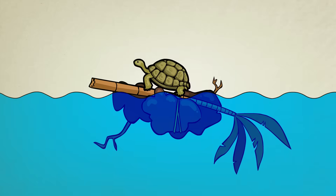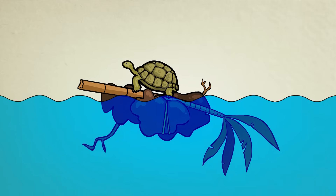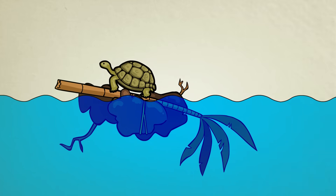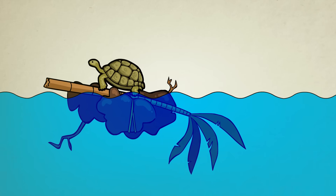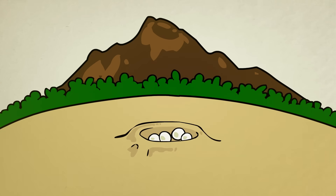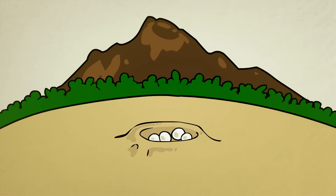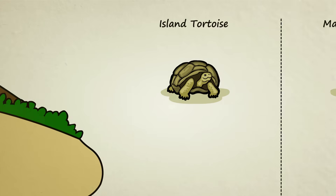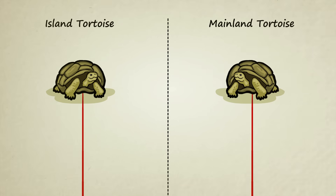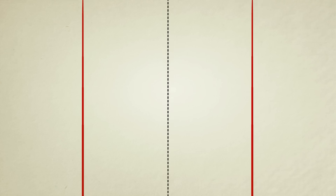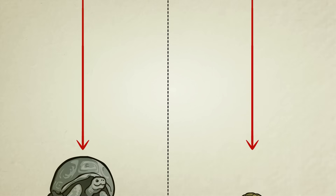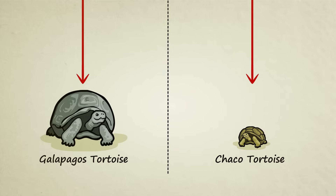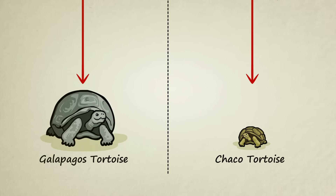Long ago, a tortoise from the mainland may have drifted to the islands, possibly on a raft of storm debris, and once arriving, laid her eggs. Random changes caused by descent with modification over thousands of years eventually transformed the island creatures and the mainland creatures so much that they could no longer be considered the same species.